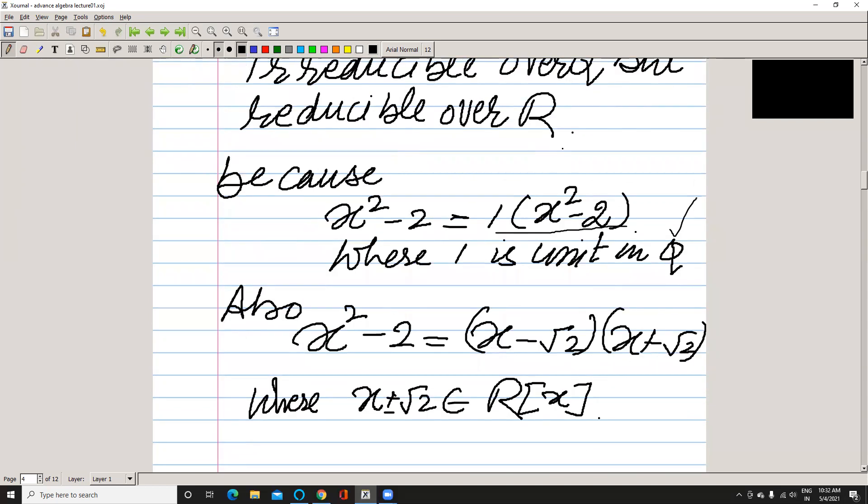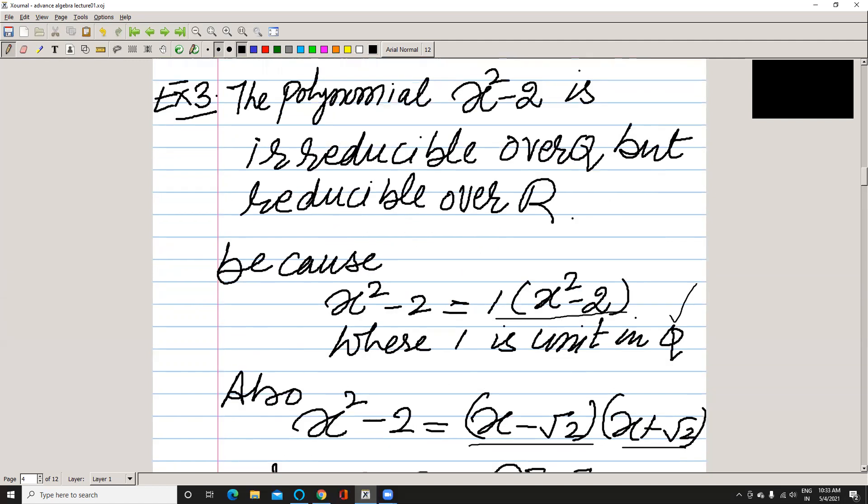But over R, we can write it like this in factored form. Because these coefficients belong to R, these polynomials belong to R[x], and these are not units, so it is reducible. A unit means a simple constant which has multiplicative inverse. I think you get some more clarity on reducibility and irreducibility.